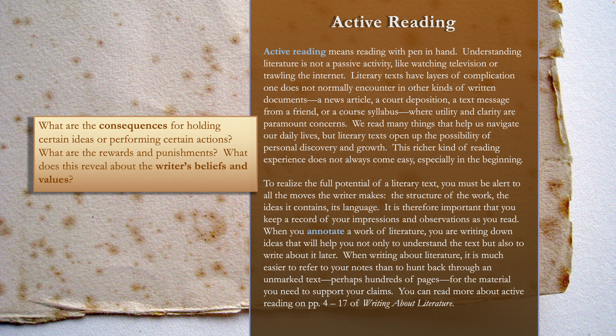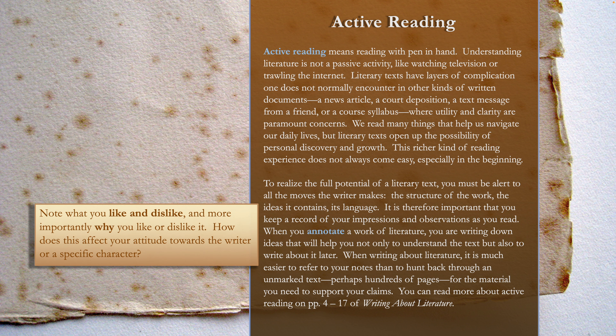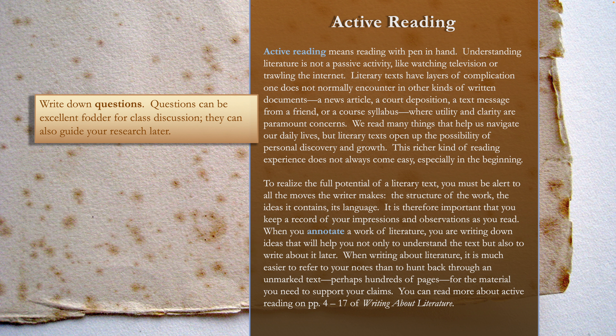What are the rewards and punishments? What does this reveal? This is particularly crucial in writing about narrative or drama. What does this reveal about the writer's beliefs and values? Note what you like and dislike, and more importantly, why you like or dislike it. How does this affect your attitude towards the writer or a specific character? Write down questions — they can be excellent fodder for class discussion and can also guide your research later.